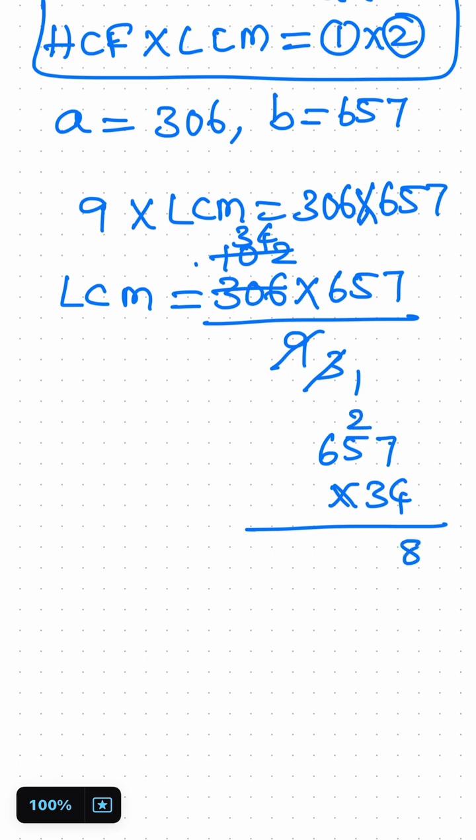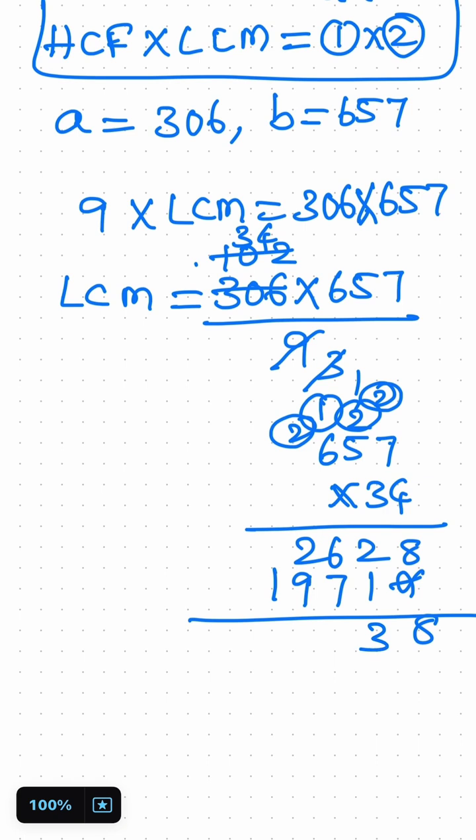4 sevens are 28, 2 carry over. 4 fives are 20 plus 2 is 22, 2 carry over. 4 sixes are 24 plus 2 is 26. 3 sevens are 21, 2 carry over. 3 fives are 15 plus 2 is 17, 1 carry over. 3 sixes are 18 plus 1 is 19. 8, 3, 13, 12, 2, 22,338 is the LCM. LCM equal to 22,338.